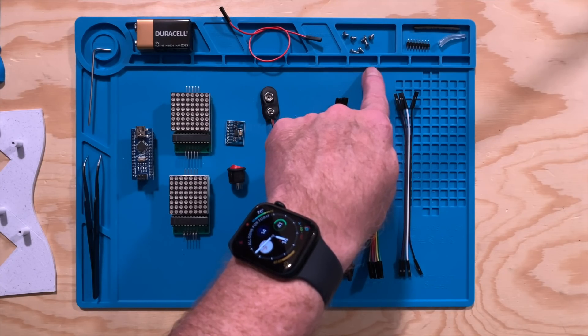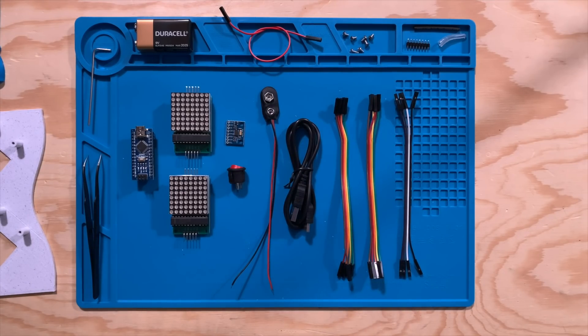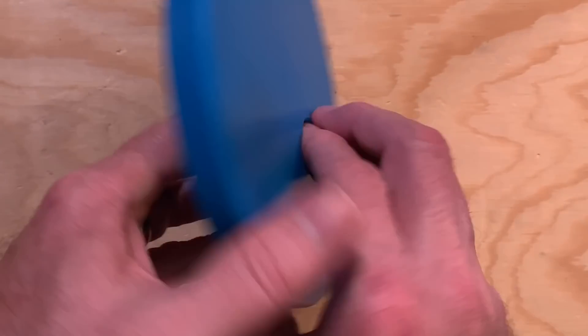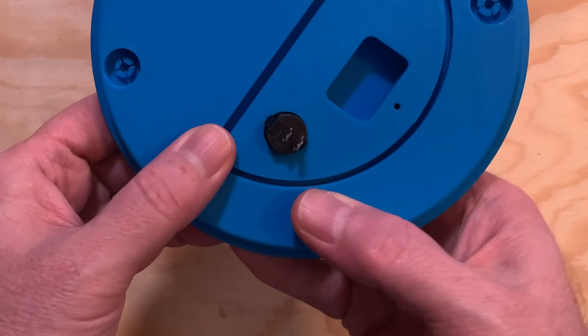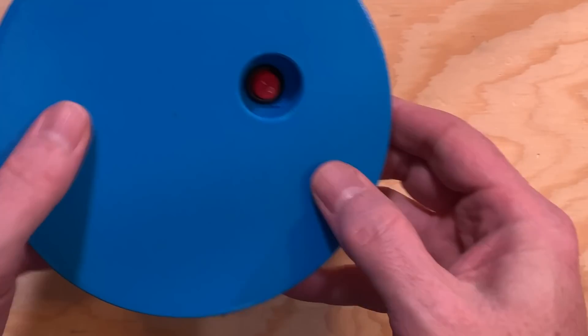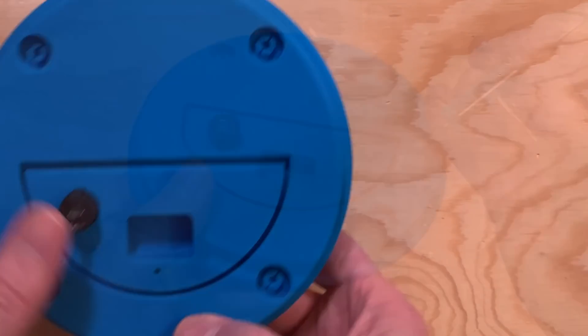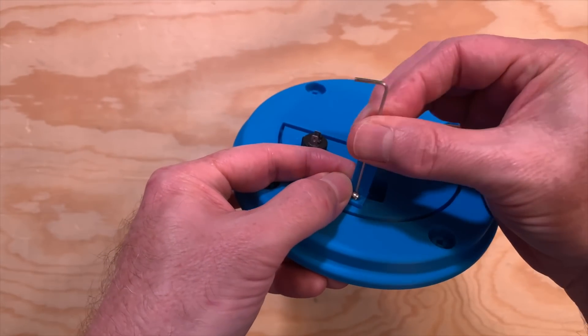You'll also need to supply about seven M2.5 or M3 screws to secure the electronics onto the printed parts. Or if you don't have those handy, you can use hot glue. So let's start with the easy things first, mounting the electronics. First, snap the power switch into the top part of the hourglass into the big hole.